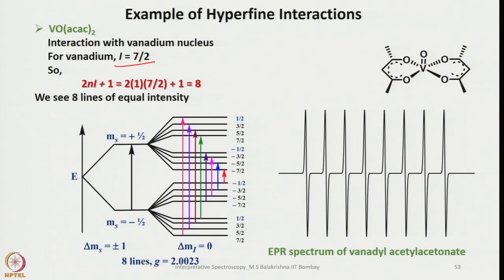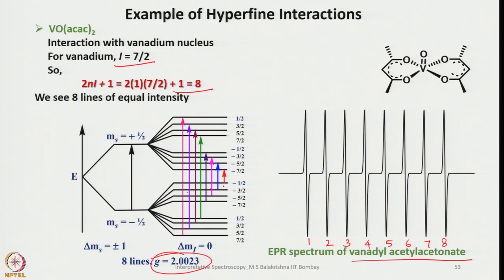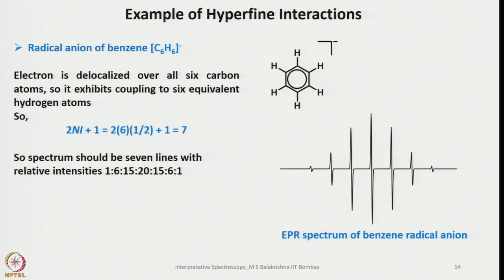Now let us look at vanadyl acetylacetonate (VO(acac)2). Here the nuclear spin of 51V is i = 7/2. The interaction with the vanadium nucleus produces 8 lines (since 2×(7/2)+1 = 8), and 8 lines can be seen in this very beautiful EPR spectrum. The corresponding transitions are shown, and the g value is 2.0023.